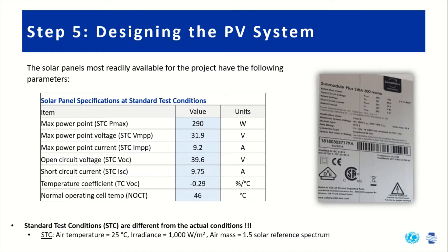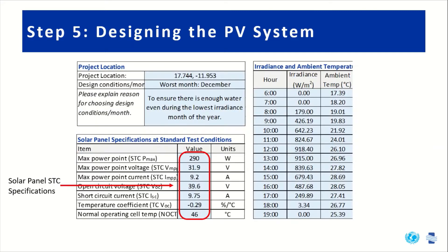Next you'll need to determine which solar panels you're using for your project. On most solar panels you'll see a sticker on the back, or you can access the technical specifications on the manufacturer's website. You can then enter those details into the solar-powered water system design tool.